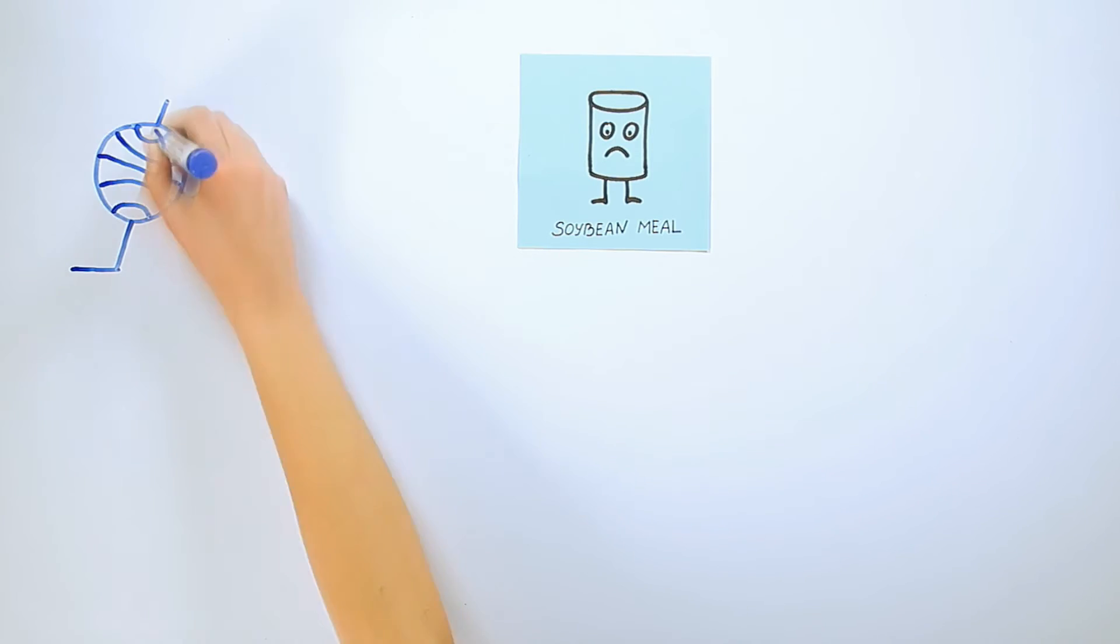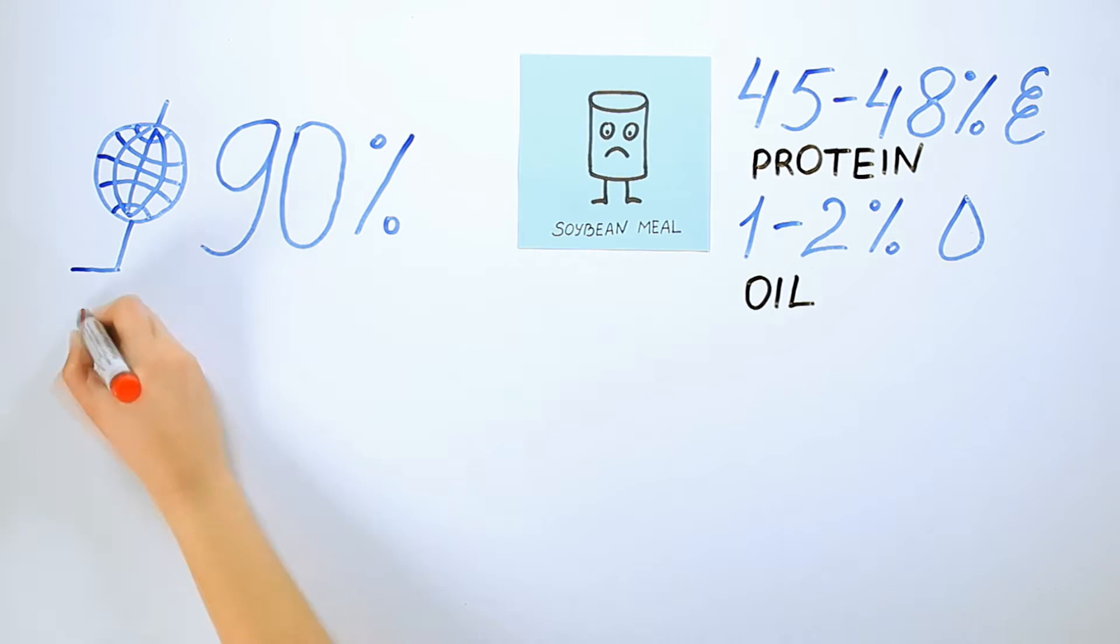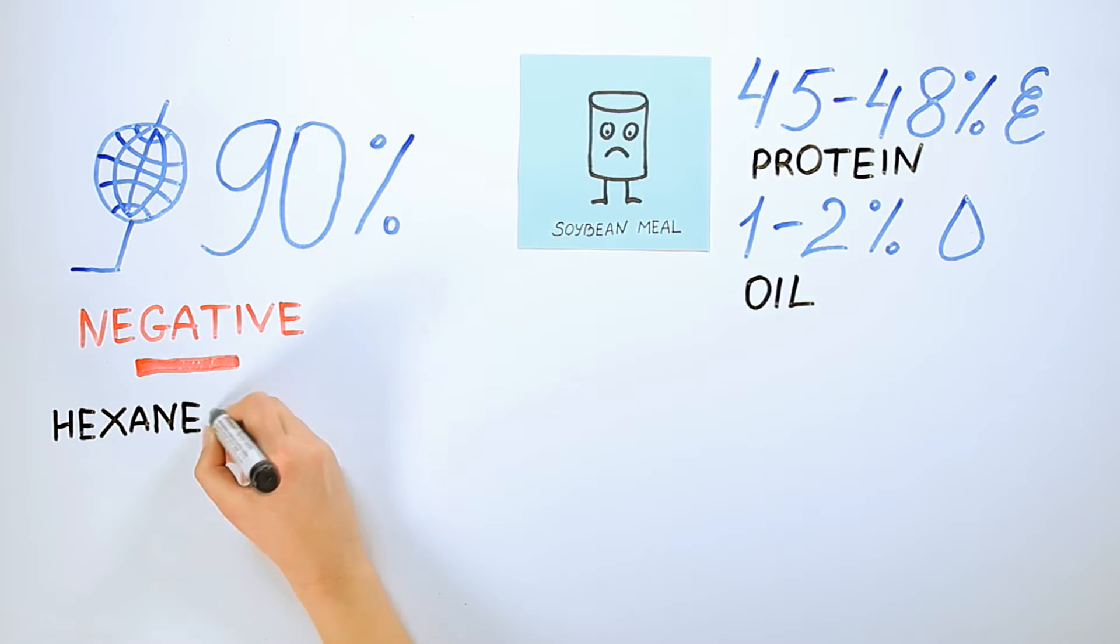Soybean meal data: 90% of world production, 45-48% protein, 1-2% oil. Disadvantages: residue of hexane about 0.2% makes it impossible to use in organic livestock raising.